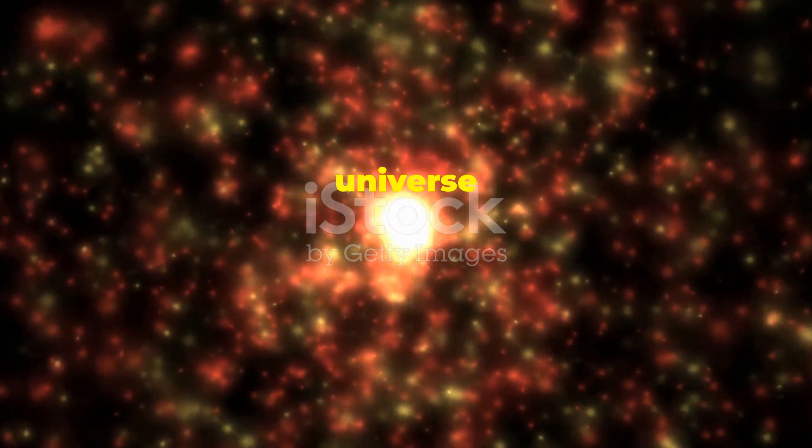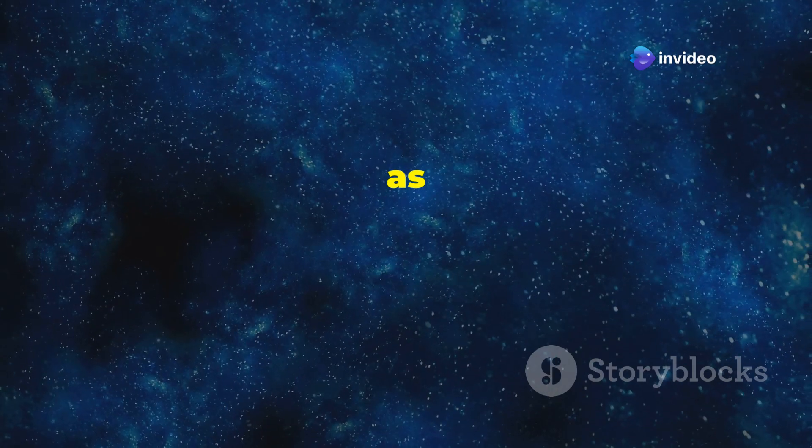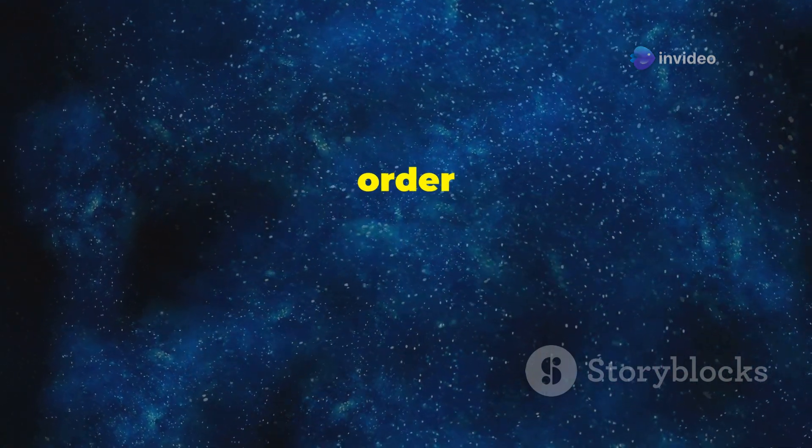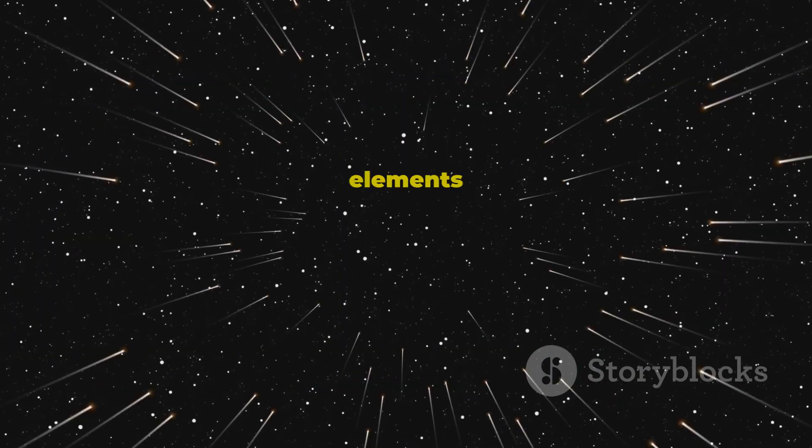From chaos to the first elements. In the first few minutes after the Big Bang, the universe was a chaotic soup of fundamental particles. These particles were constantly colliding, interacting, and transforming. But as the universe continued to cool, order began to emerge from the chaos.